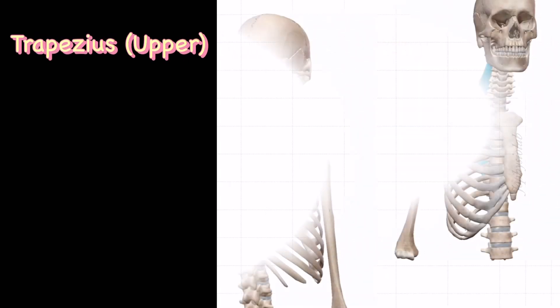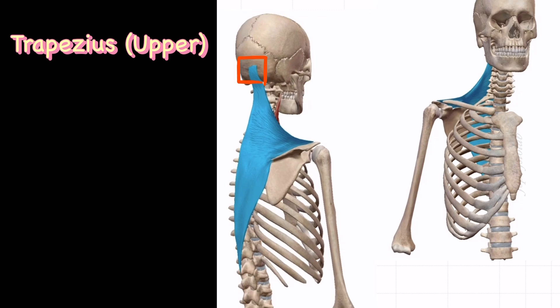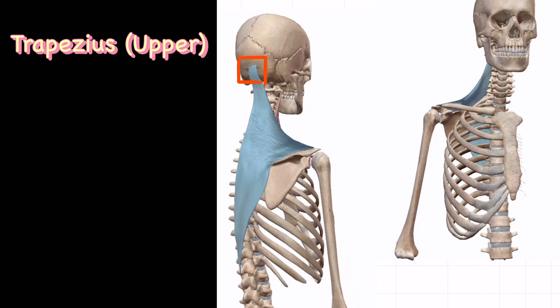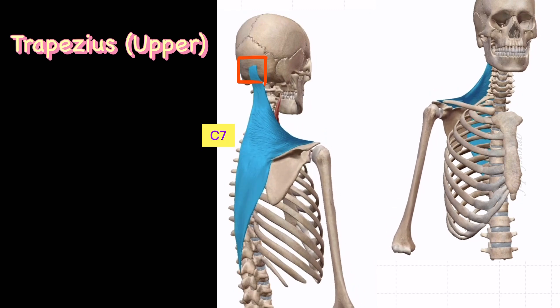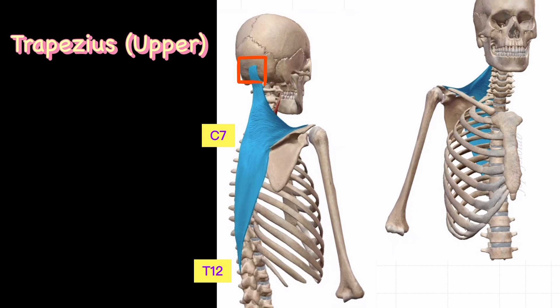The trapezius muscle attachment begins with the occipital bone and ligamentum nuchae to C7 to T12 spinous processes of the vertebrae. Trapezius inserts from the lateral third of the clavicle to the acromion and spine of the scapula.